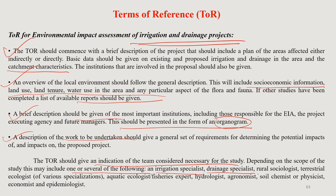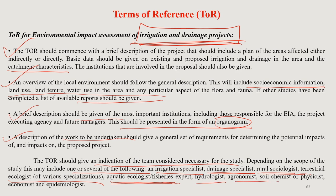For an irrigation and drainage project, the team may include a drainage specialist, rural sociologist, terrestrial ecologist, aquatic ecologist or fishery expert, hydrologist, and agronomist. These experts are required based on the nature of the project — if you go for a food processing industry, you would need different kinds of expertise. Developing a very good TOR is the first and most important step for a project to become successful.